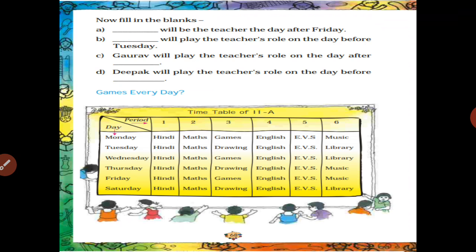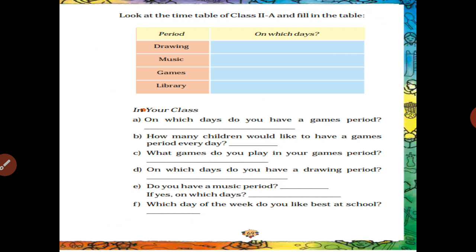Last one: Saturday — drawing comes on three days. Now for music, games, and library, fill in your class timetable. In your class, on which days do you have a games period? It depends on your class timetable. Just read it and write the answer.